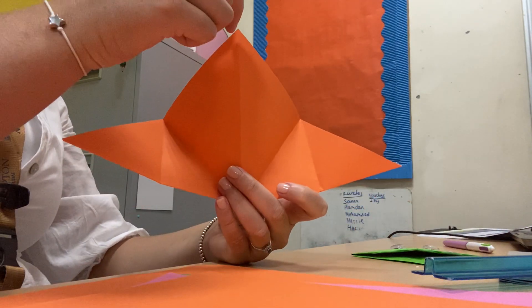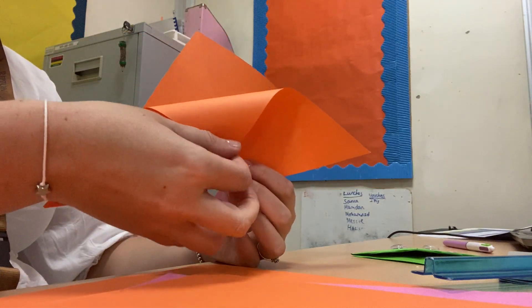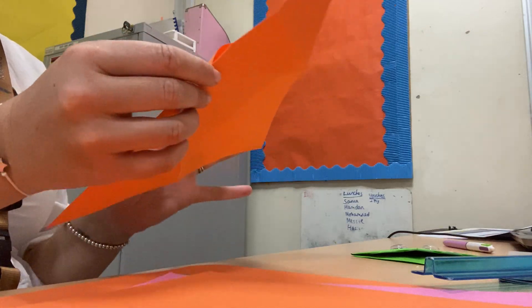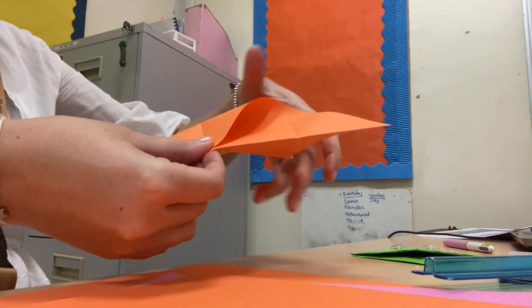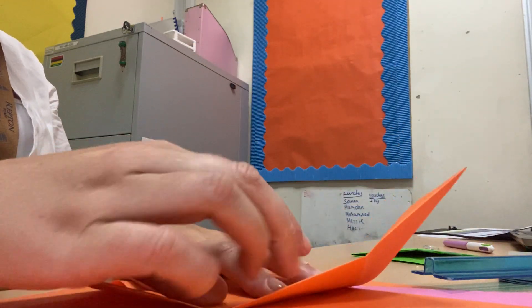So now you need to take the top of your triangle and only one. Fold that one down so you leave this back one up. Fold this down until it meets the middle of the bottom like this. And again, press it down.